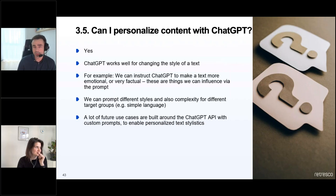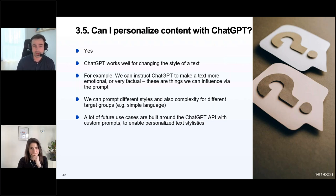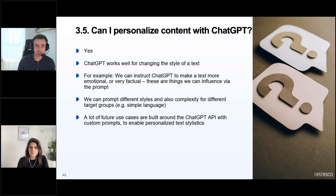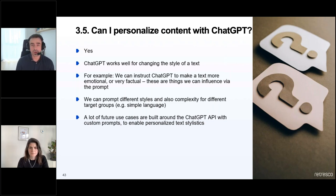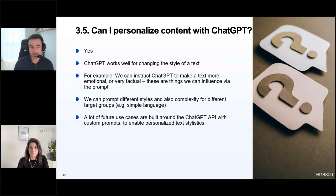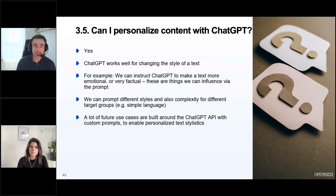Can I personalize content with ChatGPT? Yes. ChatGPT and the new GPT models work very well for changing the style of a text — you can instruct ChatGPT to make a text more emotional or more factual, influence these things via the prompt, prompt different styles and complexity for different target groups, make a text simpler to understand, or insert technical terms to make it more complex. A lot of future use cases are built around the API with custom prompts that describe which stylistics you want in the text.